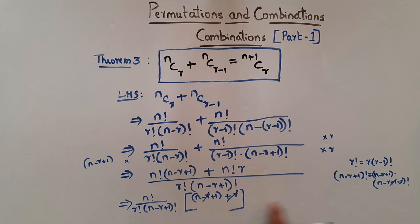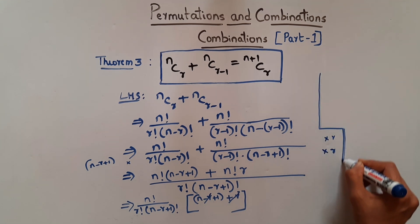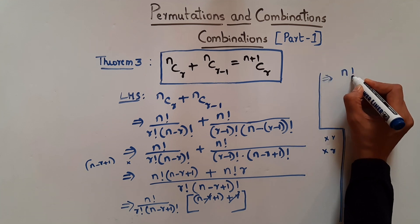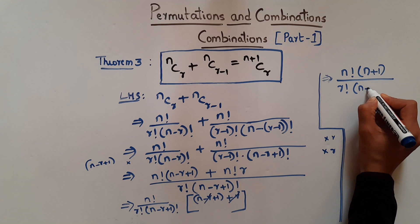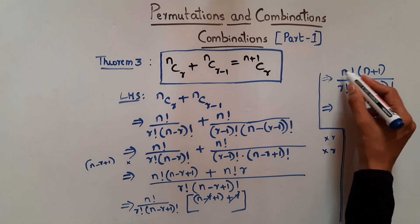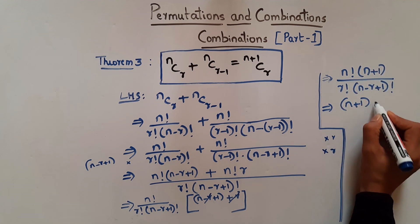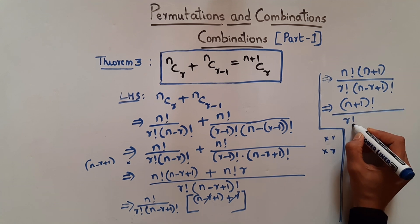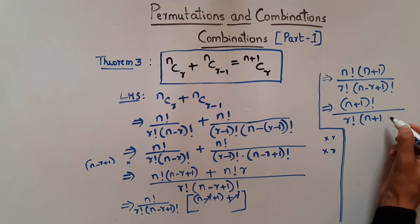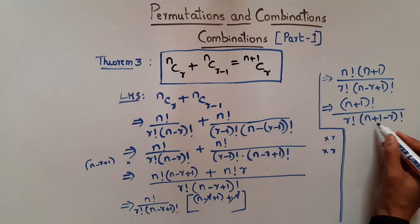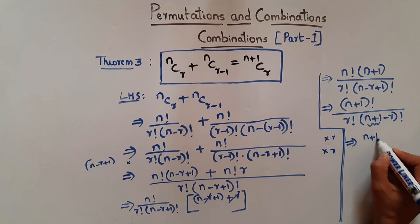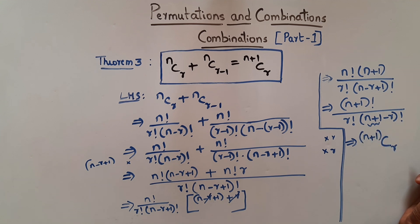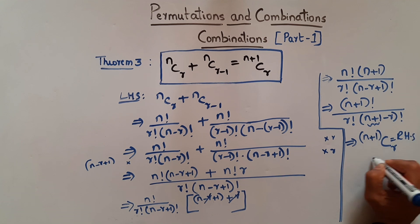Continuing: n! × (n+1) = (n+1)!. So the expression becomes (n+1)! / (r! × (n+1−r)!), which is exactly (n+1)Cr. This equals the RHS, hence the theorem is proved.